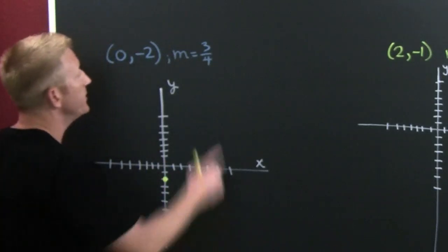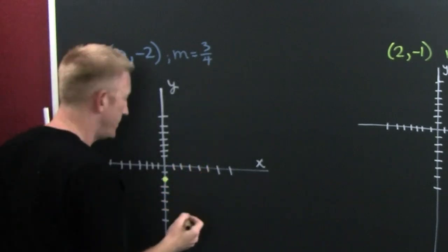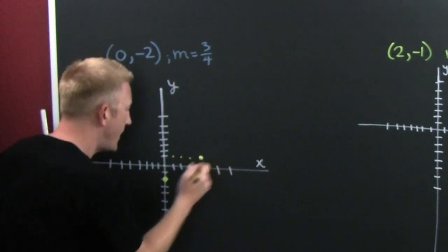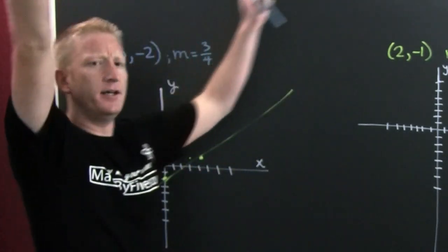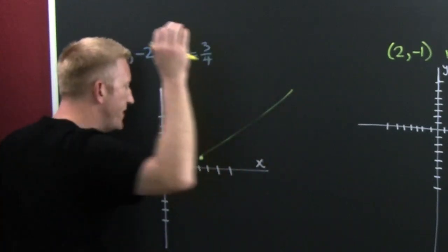And then you perform the slope. You go up three over four because it's rise over run. So then you go up one, two, three, over one, two, three, four. You put a dot. You connect the dots and you're done! That was easy.